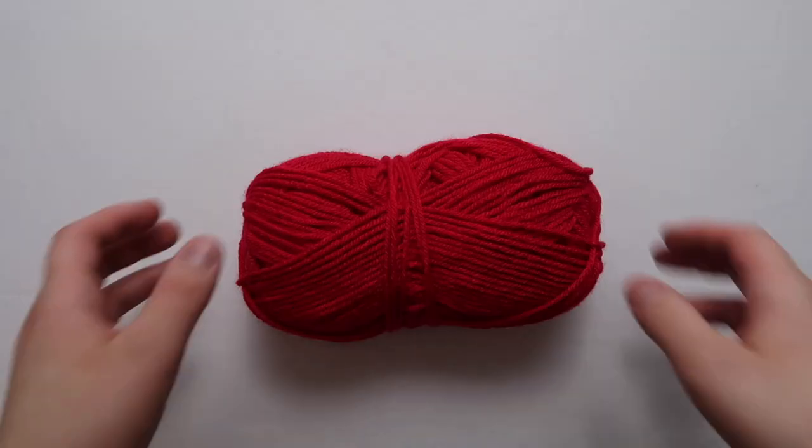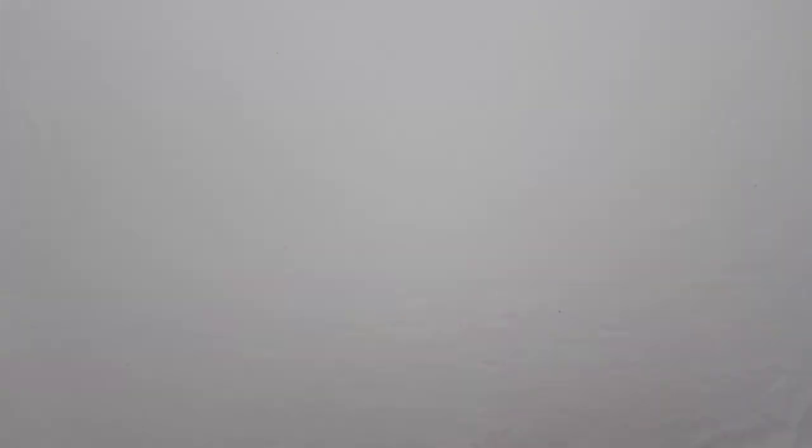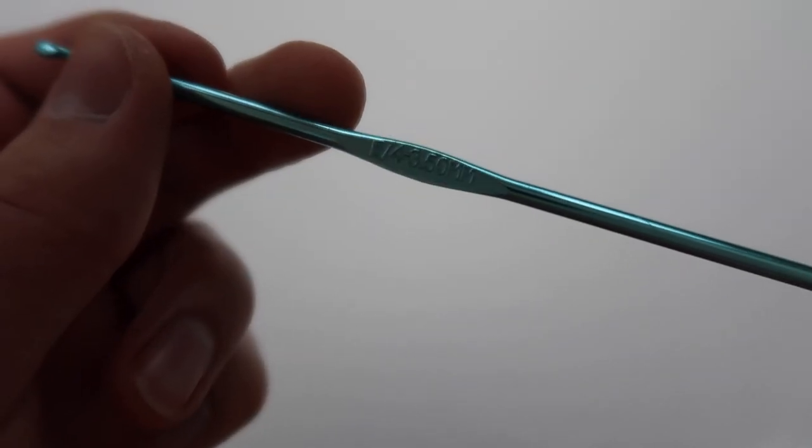I would say it's pretty good for a beginner project because you only have to know a couple stitches, which I do show in the video. We're using a double crochet, a half double crochet, a single crochet, and a slip stitch. That's all you need to know for the entire project. For this project you're going to want a thinner, softer worsted weight yarn and a 3.5 millimeter crochet hook.